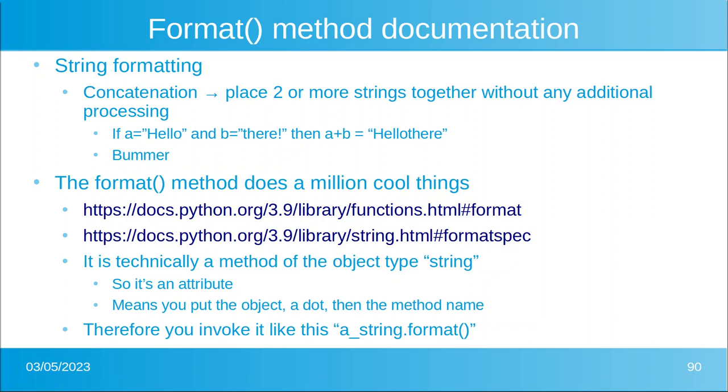So let's look at string formatting. String formatting uses a method called format. This is different than concatenation. Concatenation is when you place two or more strings together without any additional processing. So as the example there, if you had string a 'hello' and string b 'there' and you put them together a plus b, you would get 'hello there' without a space because the space is obviously another character.